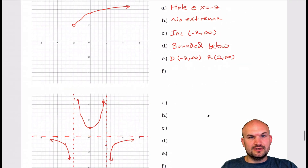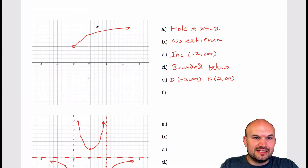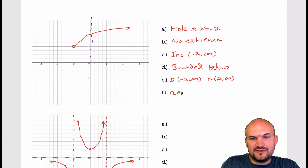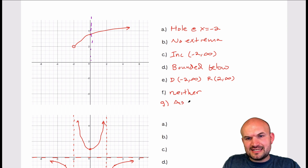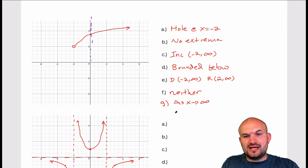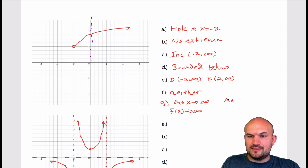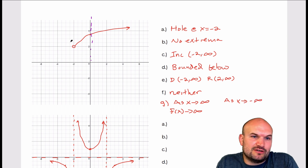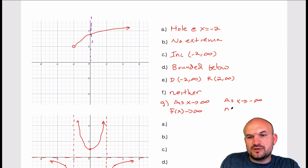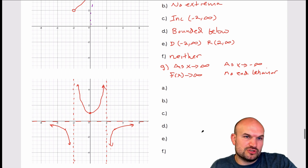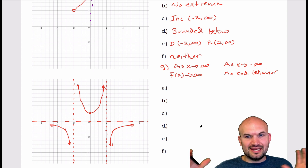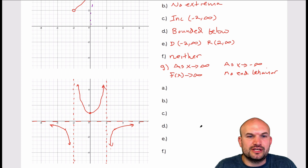F — even, odd, or neither. When we look at this graph and try to find any symmetry, flipping over the x and y axes, the graph would end up somewhere else entirely. This has no y-axis or origin symmetry, so this is neither. For the end behavior: as x approaches infinity, the graph is increasing, so f(x) approaches infinity. As x approaches negative infinity, the graph stops — it doesn't approach negative infinity, so there's no end behavior in that direction, since x only approaches negative 2, not negative infinity.